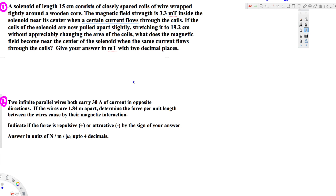The first problem: a solenoid of length 15 centimeters consists of closely spaced coils of wire wrapped tightly around a wooden core. The magnetic field strength is 3.3 milli-tesla inside the solenoid near its center when a certain current flows through the coils. The coils are then pulled apart slightly, stretching it to 19.2 centimeters without appreciably changing the coil area. What does the magnetic field become near the center when the same current flows through the coils?